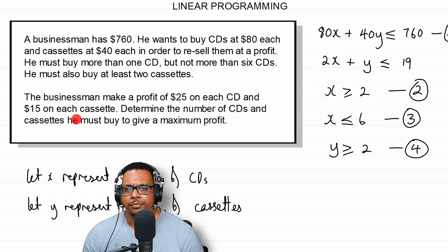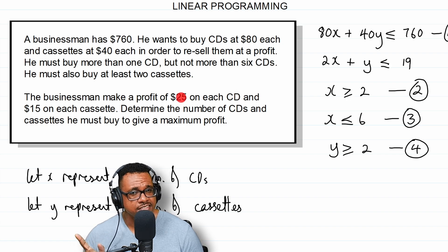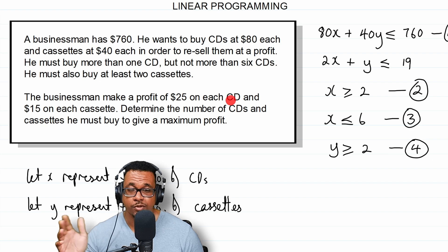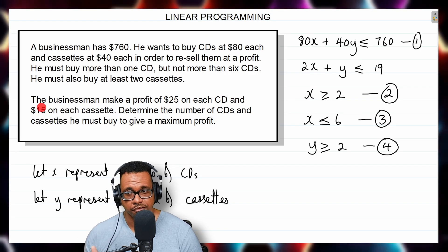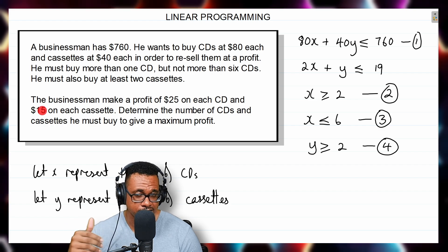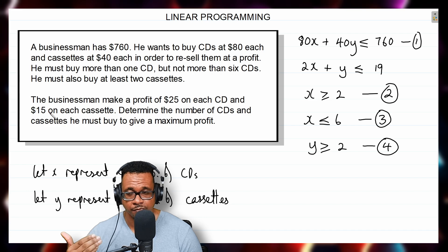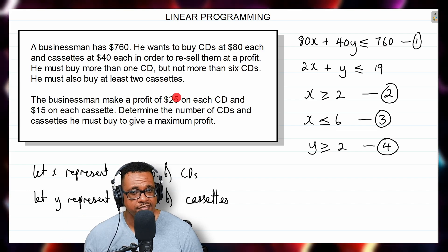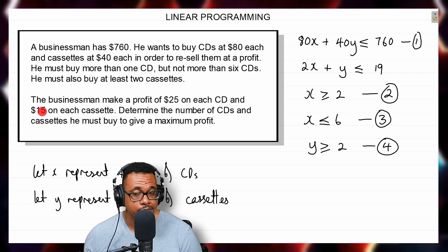This section on profit gives us our objective function. The businessman makes a profit of $25 on each CD, and the number of CDs is x, so 25x is the profit from CDs. He makes $15 on each cassette, so 15y is the profit from cassettes. His total profit would be 25x + 15y, which is the function we want to maximize.